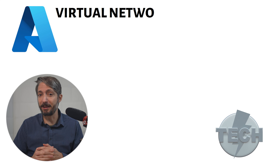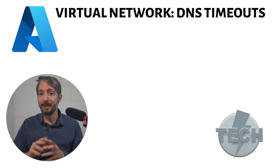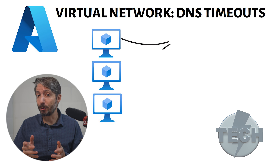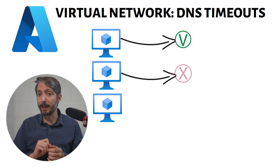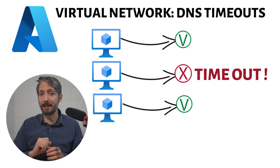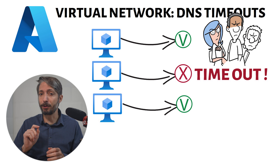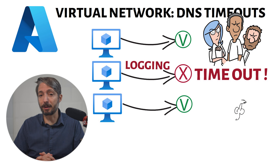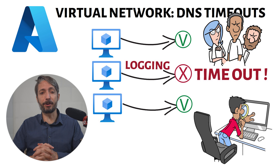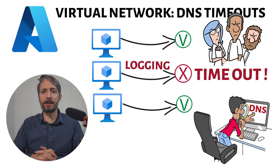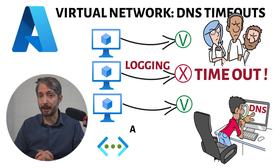To set the stage, let's look at the specific issue my client encountered. They have a fleet of Windows VMs running in Azure, and every so often their application would throw a connection timeout or they would experience a delay. These timeouts were rare, but disruptive enough that they couldn't just ignore them. After capturing logs and running tests over a couple of weeks, they finally noticed something interesting — it was specifically their DNS requests which were timing out. This led us to investigate further into Azure's virtual network setup.